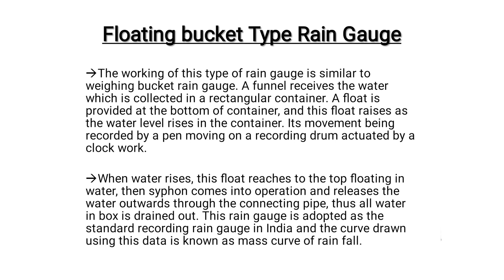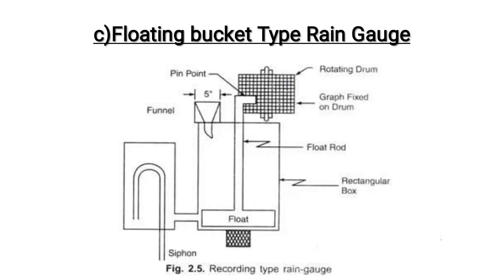In India, only non-recording rain gauges are used. The reason is that with recording rain gauges, we don't know whether the readings are accurate because everything is done automatically by the mechanism. With non-recording rain gauges, we carry out the measurements ourselves and can verify the values. Since the recording type devices operate automatically, we cannot be certain of their accuracy, which is why non-recording rain gauges are preferred in India and other countries.